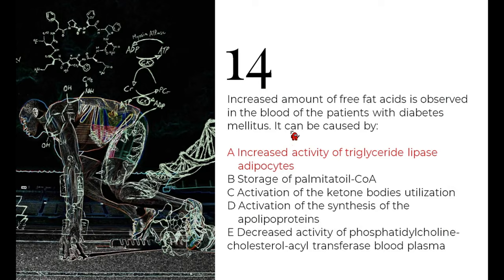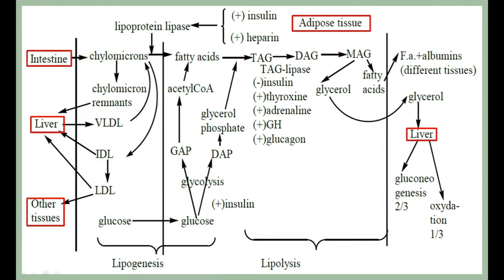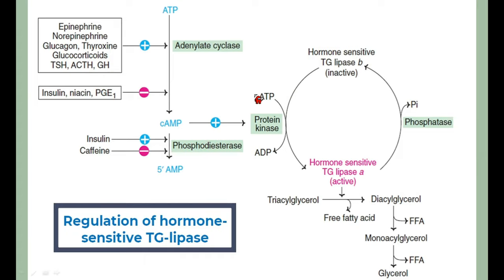Question 14: increased free fatty acids are found in the blood of a diabetic patient — caused by which enzyme? In fat metabolism, intestinal fat is absorbed as chylomicrons, processed by the liver, and stored in adipose tissue as triacylglycerol. When fatty acids are needed for energy or phospholipid synthesis, mobilization occurs via hormone-sensitive triglyceride lipase.